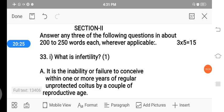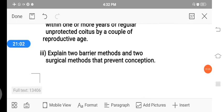Then in Part D Section 2, the 5 mark question. The question is split into two. First one, what is infertility? It carries one mark, which means inability or failure to conceive or pregnancy within one or more years of regular unprotected coitus by a couple of reproductive age is called infertility. Very simply, we are defined as inability to conceive a mother is called infertility. Then the next 4 mark question is, explain two barrier methods and two surgical methods that prevent conception. That is to prevent pregnancy.